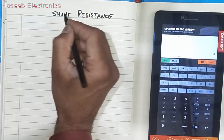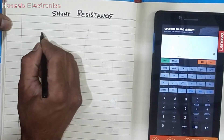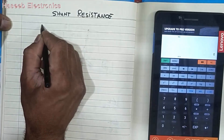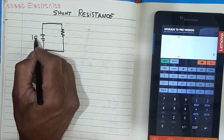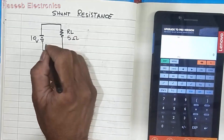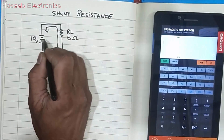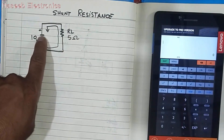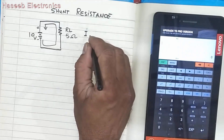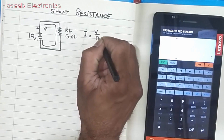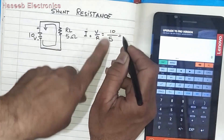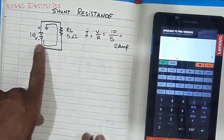What is shunt resistance? We can say it is a parallel path to some electrical circuit. For example, I will draw a circuit with a positive and negative battery — a voltage source. When we connect our load, for example a 10-volt source with RL of 5 ohms, electronic current flows from negative to positive. According to Ohm's Law, I = V / R, so 10 volts divided by 5 ohms gives us 2 amperes.